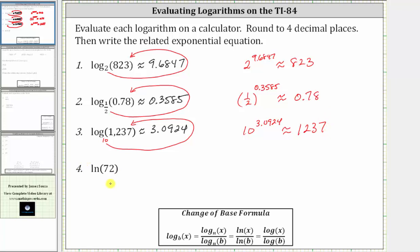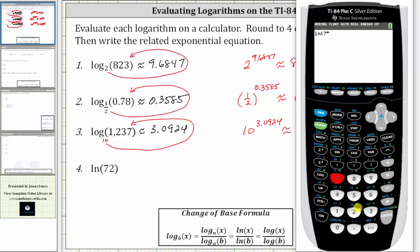For number four, we have natural log 72. The natural log button is on the home screen. We enter natural log 72 close parenthesis and enter. To four decimal places, we have 4.2767.